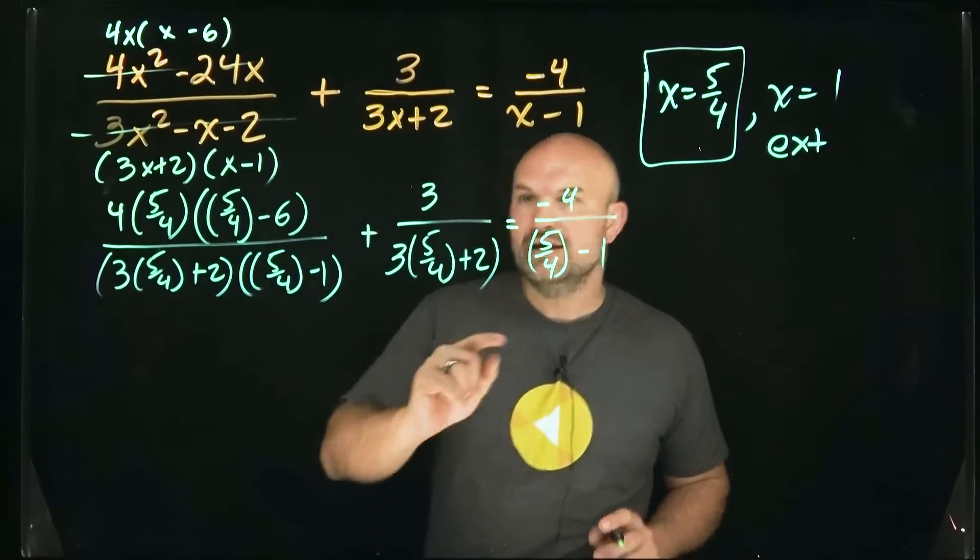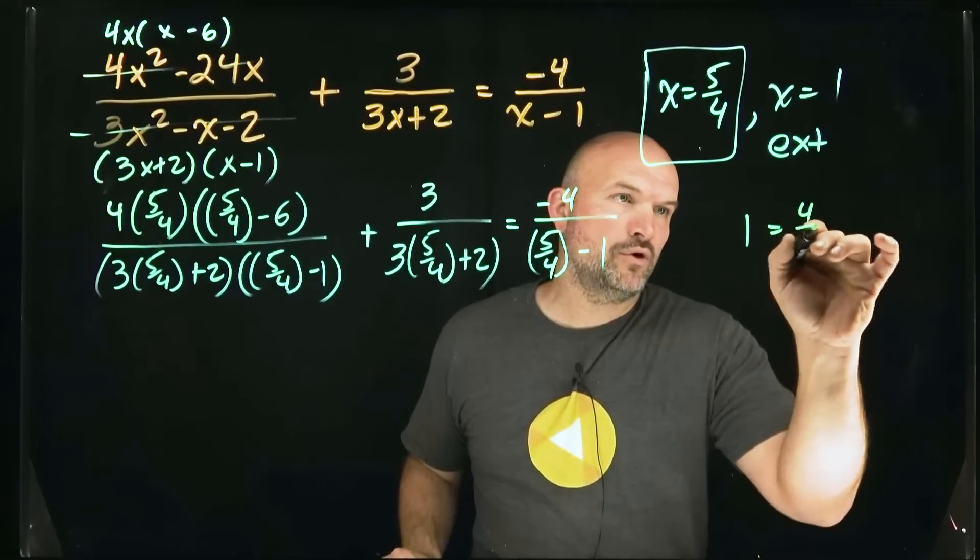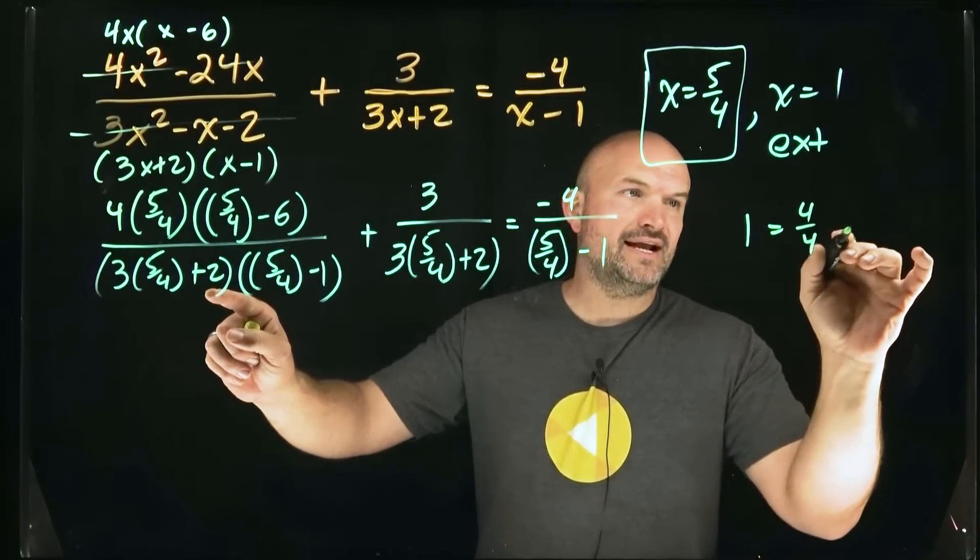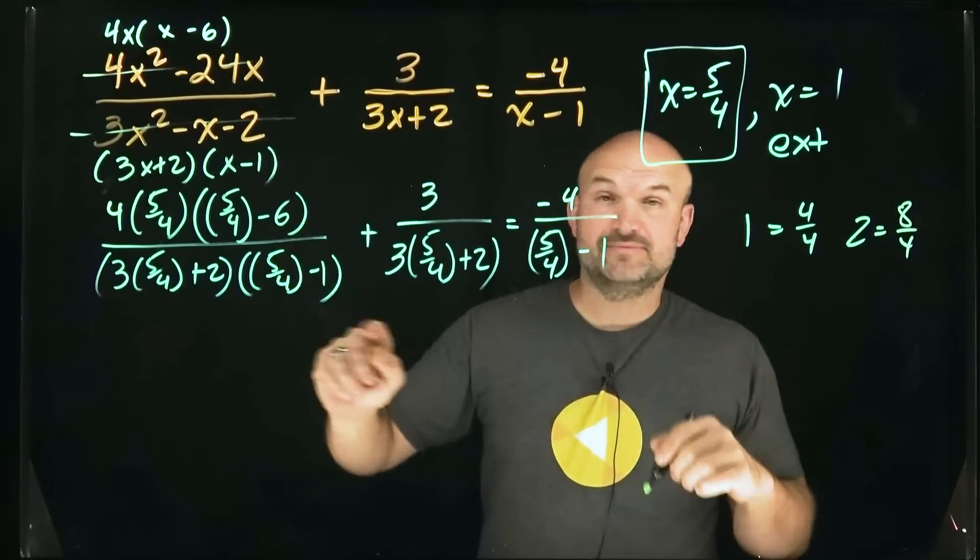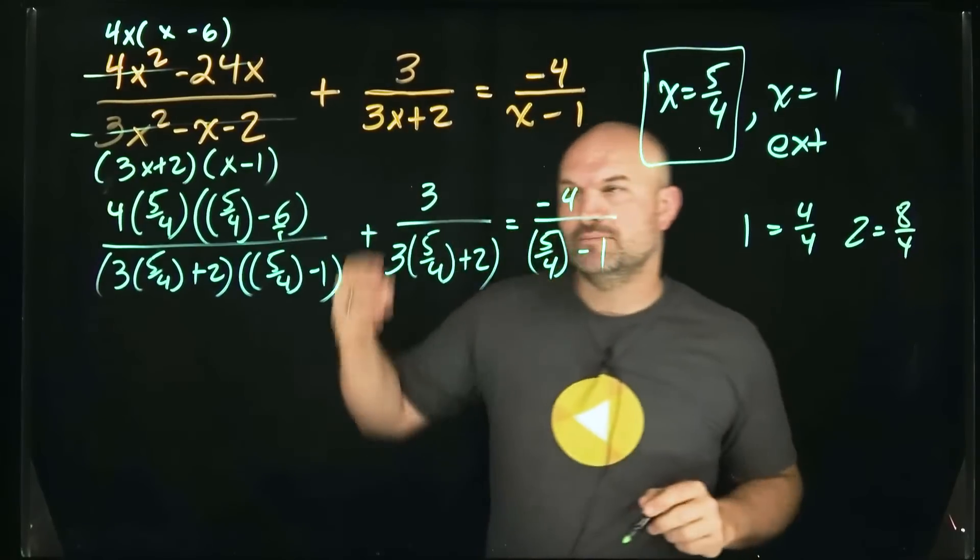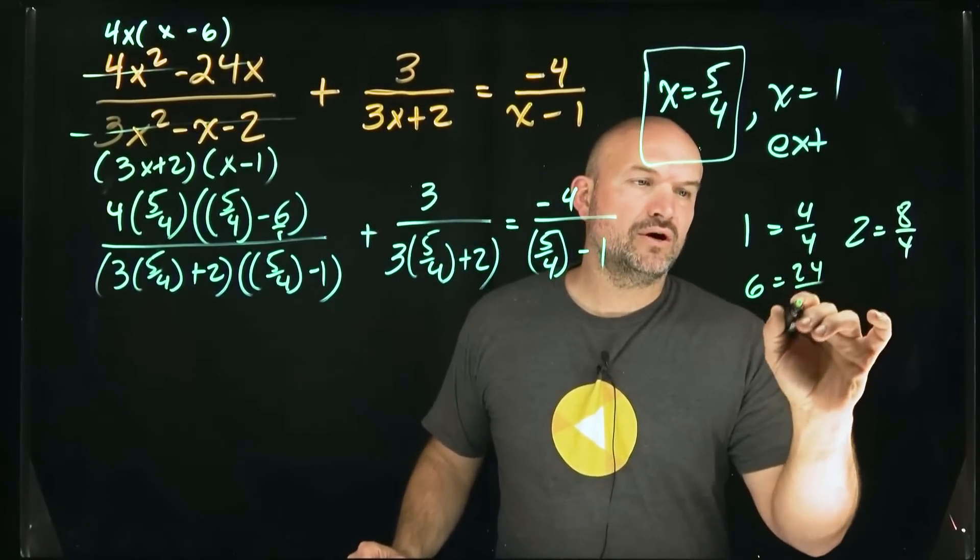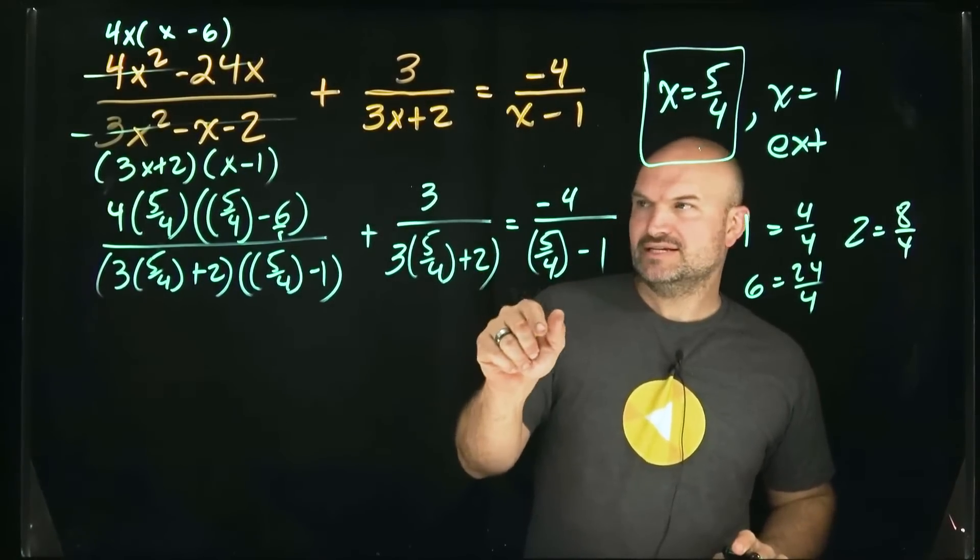But the cool thing is I can write 6, I can write 1, I can write 2 all with having a denominator of four, right? Because one equals four over four. If I take two over one and multiply by four over four, then I could say two is equal to eight over four. We could do 6, right? That's going to be, if you think about 6 as six over one, multiply four on the top and bottom, that's going to be 24 over four. And I think that's all that I got, right? One, two, and six. Yes it is.